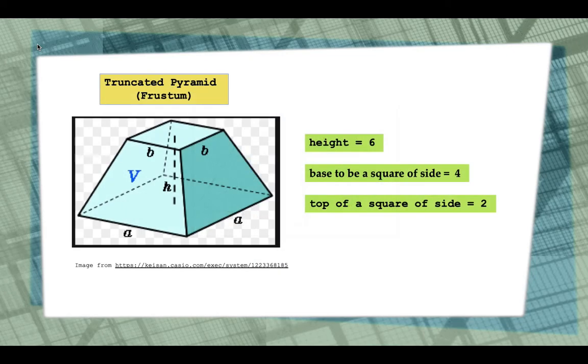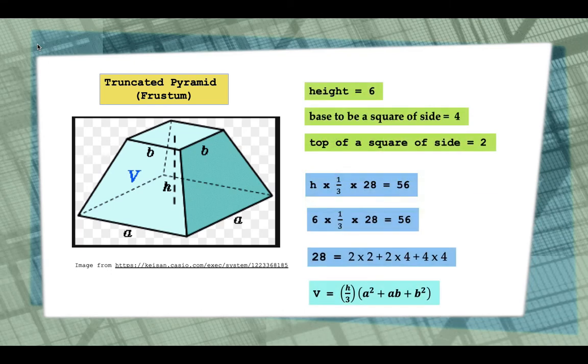the height to be 6, the base to be a square of side 4, and the top to be a square of side 2. He multiplies the height by 1/3 times 28, finding that the volume is 56.